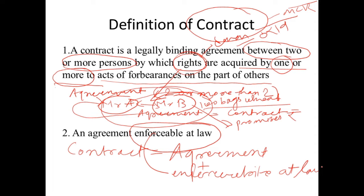To call a particular thing a contract, there should be agreement plus enforceability. That agreement should be enforceable at law. Enforceable at law means: if someone involved in the agreement fails to keep the promise, either party can file a case against the defaulter. That right they got according to the agreement is called enforceability at law. That agreement which is enforceable at law is called a contract.